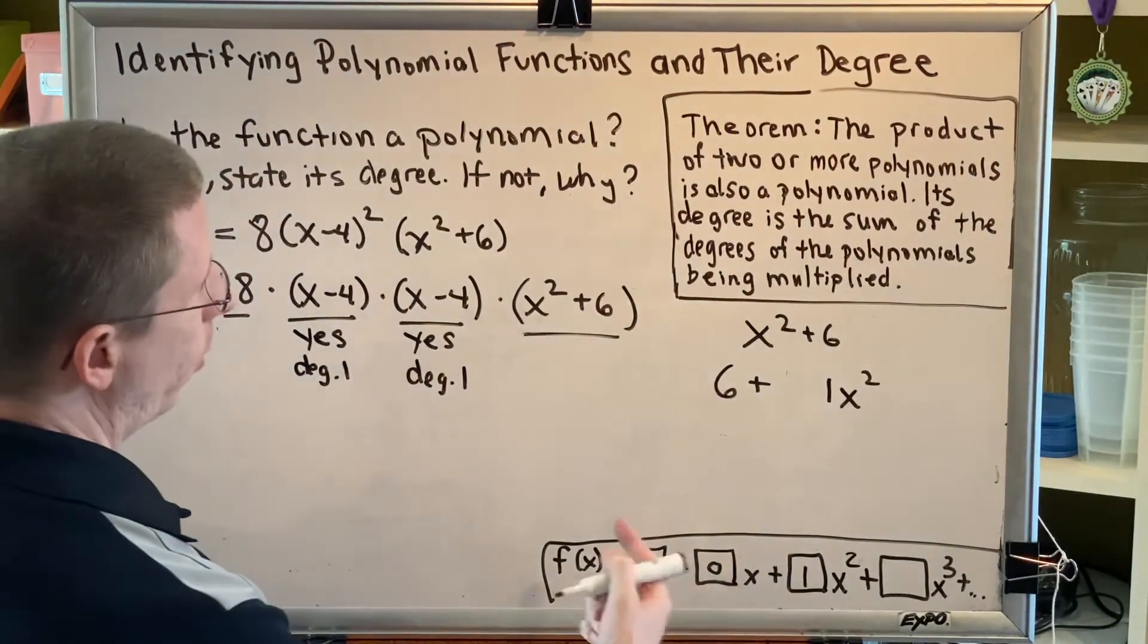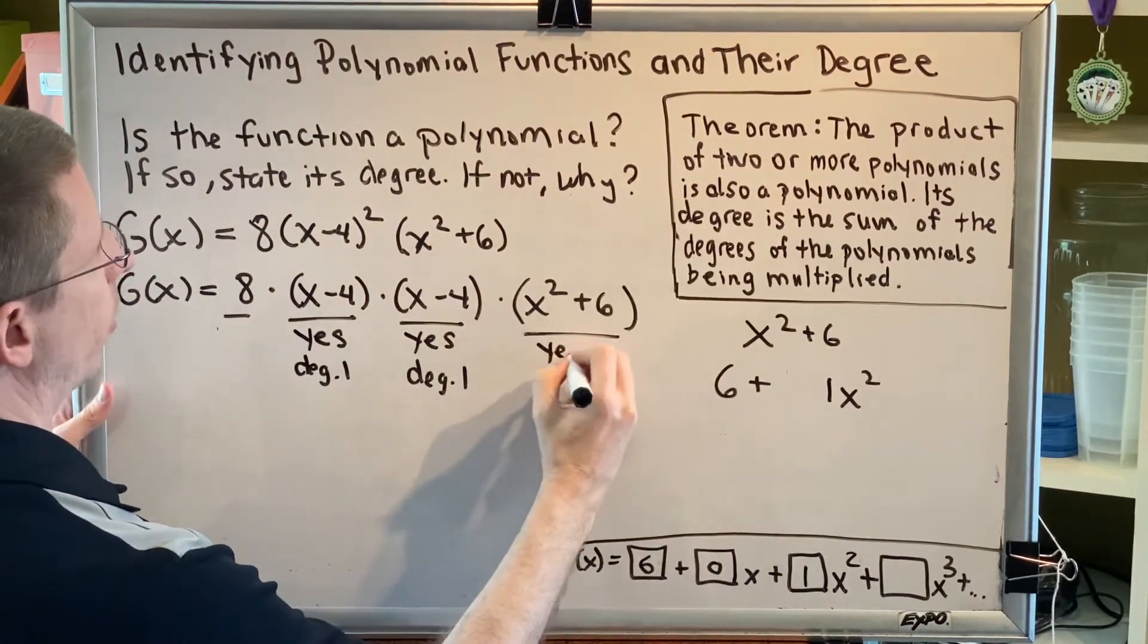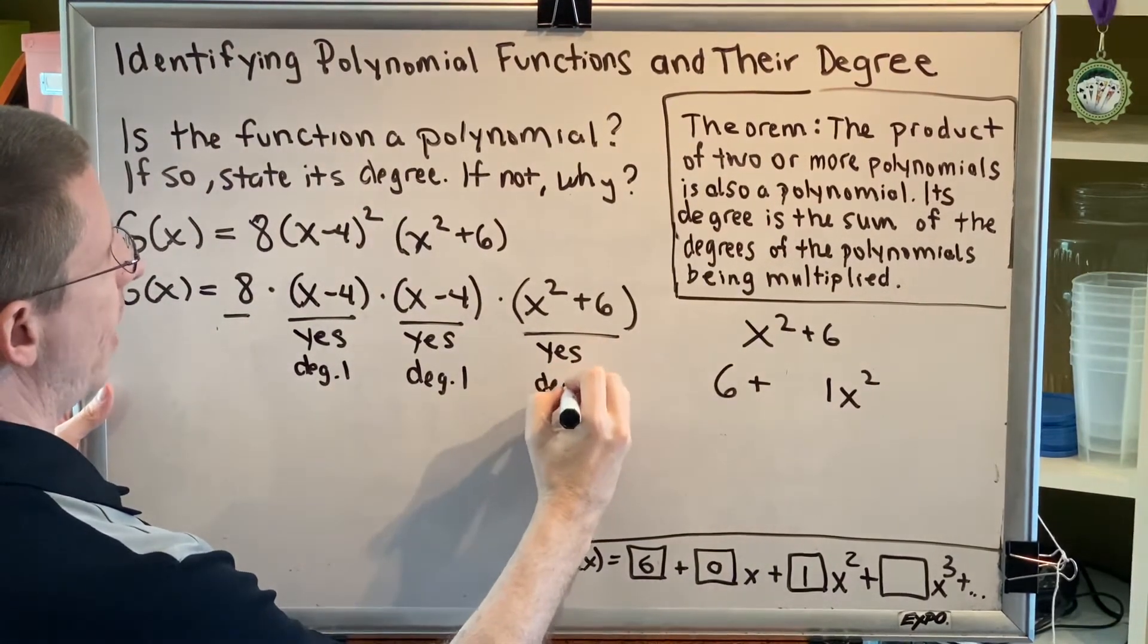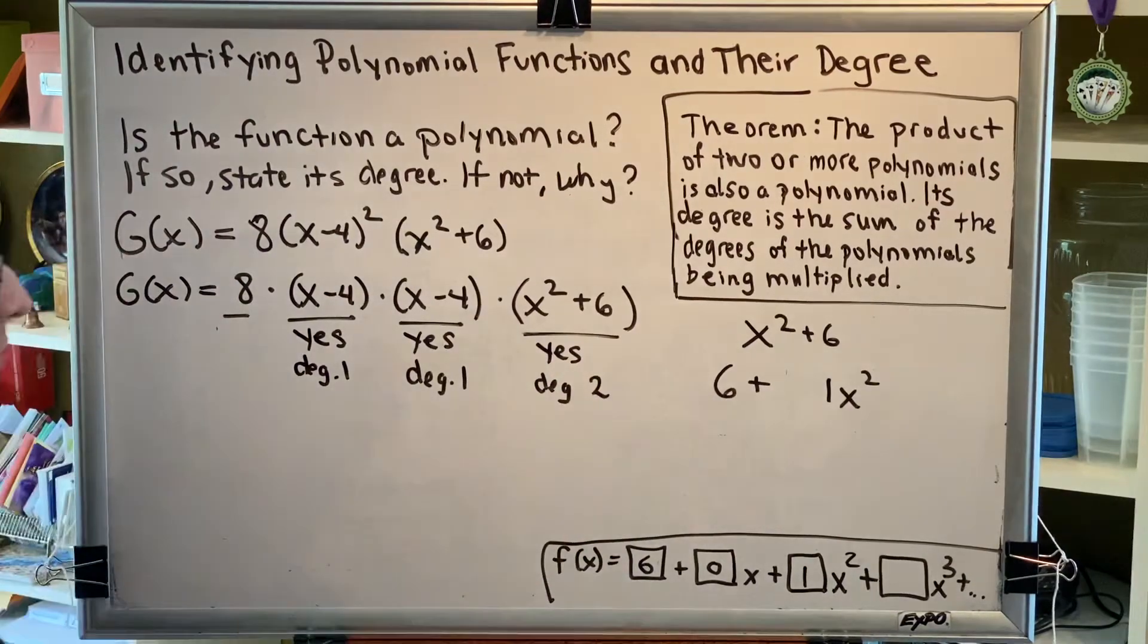6, 0, and 1 are all real numbers. Therefore, yes, this is a polynomial. And its degree is the highest exponent of x, which is 2.